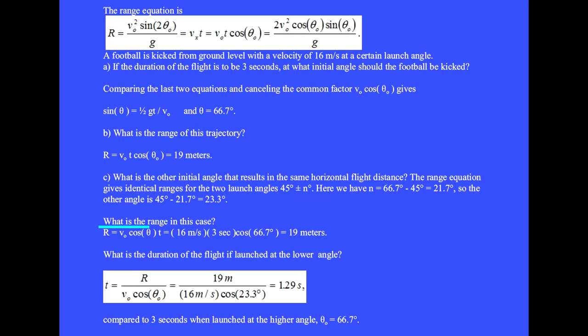What is the range in this case? We have R = v₀cos(θ)t and we get 19 meters again. What is the duration of the flight if launched at the lower angle? Arranging this equation for t, we have t = R/(v₀cos(θ₀)) = 1.29 seconds, compared to 3 seconds when launched at the higher angle of 66.7 degrees.